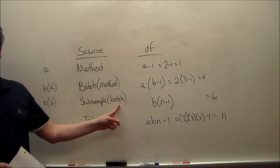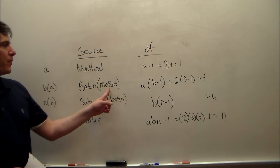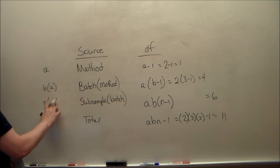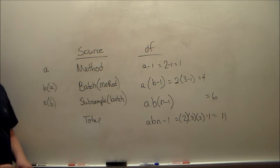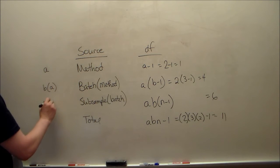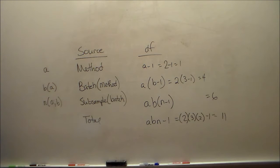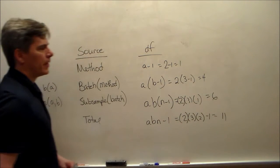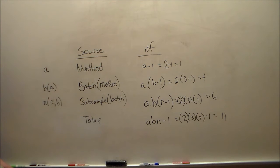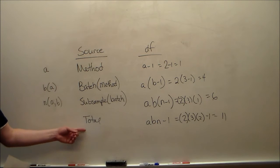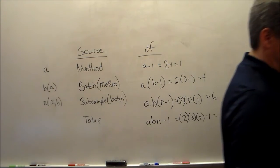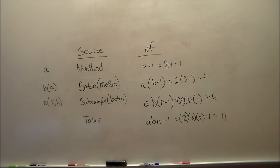But that batch contains effects from what other variable? It comes from the method. The subsamples are not just nested within the batch — from the last lecture, we know it's also nested within A. So if we want to do our testing, we're going to make sure that we use the correct mean squared, and it's not always going to be the one we want.